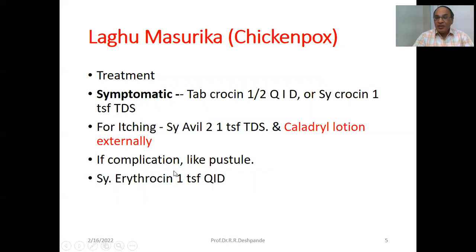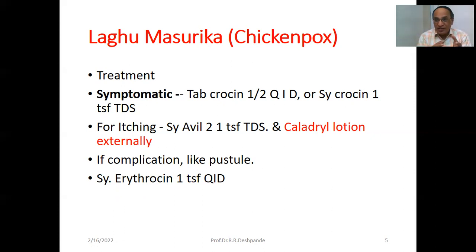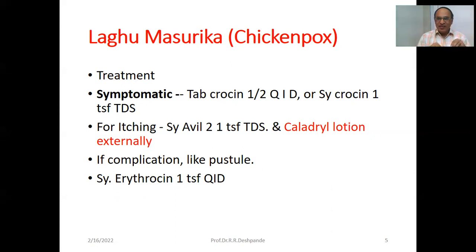If complication like pustule occurs — pustule means pus, that is infection — it is called super-added bacterial infection. Then you must start antibiotics. Remember: antibiotics are not antiviral — bacteria and viruses are different. But when super-added bacterial infection occurs, start syrup erythromycin — that is an antibiotic — one teaspoon, four times a day (QID), morning, afternoon, evening, and night.